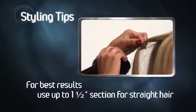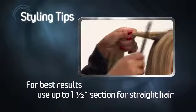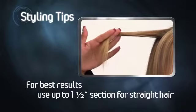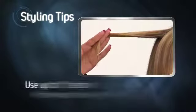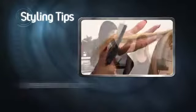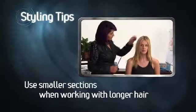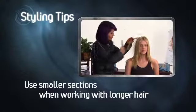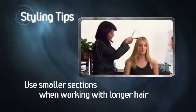For best results, use a section of hair that is not too wide. We recommend up to one and a half inches wide for straight hair and one inch wide for wavy or heavily textured hair. For longer hair below the shoulders, use a smaller section to make sure that the curling chamber is not overloaded.